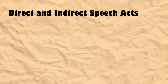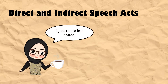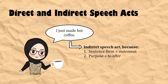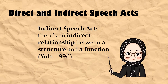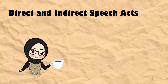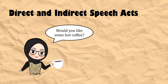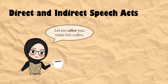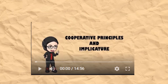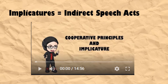When I say 'I just made hot coffee,' even though the sentence form is a statement, but the purpose is to offer — this is an indirect speech act. Indirect speech act means there is an indirect relationship between a structure and a function. The direct speech act form of an offer of coffee can be in interrogative form, such as 'Would you like some hot coffee?' Or even in the form of a statement with a performative verb 'offer,' like 'Let me offer you some hot coffee.' Do you still remember my video about cooperative principle and implicatures? I said that implicatures were also in indirect speech acts.